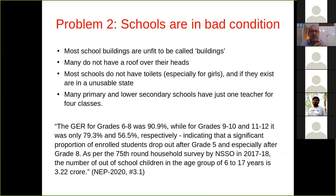The schools are in bad condition. Most school buildings are unfit for any practical use — many do not have roofs over their heads, many do not have toilets, especially girls' schools. The teacher-to-student ratio is abysmally low. As a result, the new education policy admits that the gross enrollment ratio for grades 6 to 8 was 90.9%, while for grades 9 to 10 and 11 to 12 it was only 79.2% and 56.5% respectively. This indicates that a significant proportion of enrolled students drop out after grade 5, and especially after grade 8. As per the 75th round household survey in 2017-18, the number of out-of-school children in the age group of 6 to 17 is 3.22 crores.